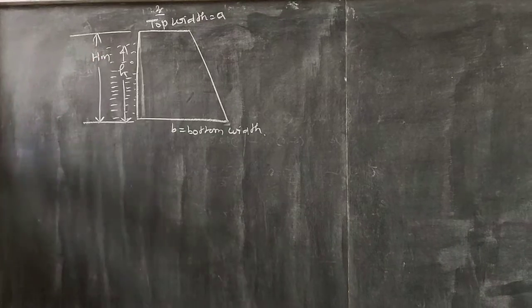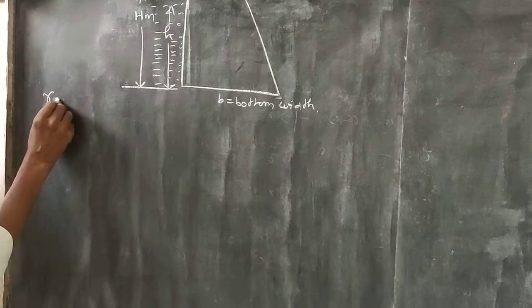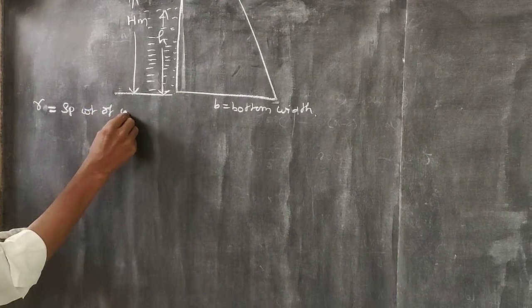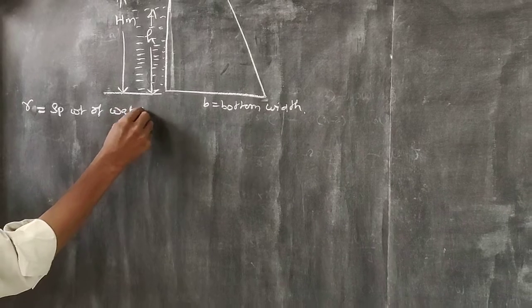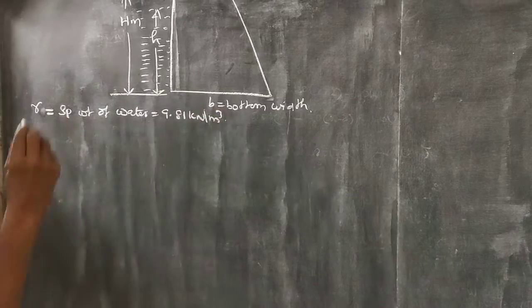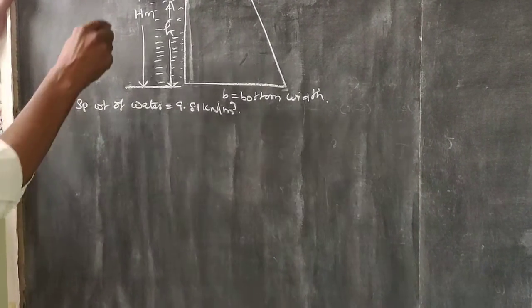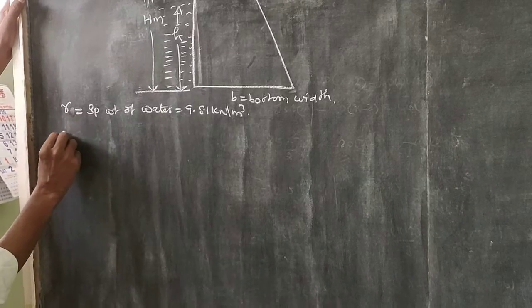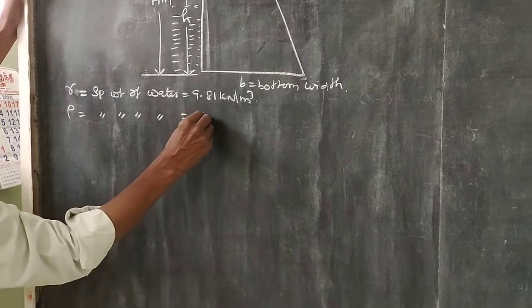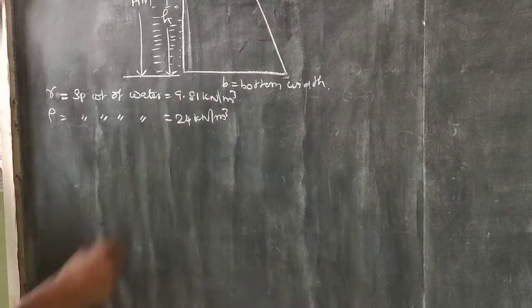When the water specific weight is constant, the specific weight of water is 9.8 or we use 10 kN per meter cube.